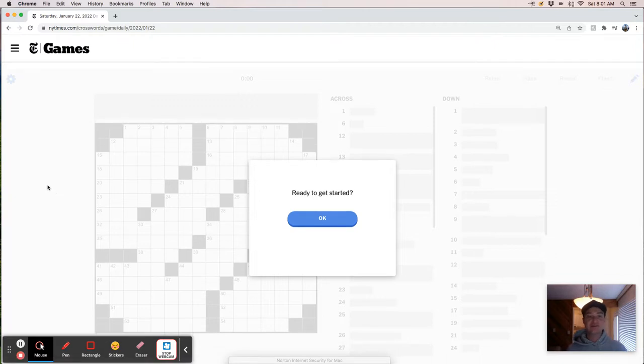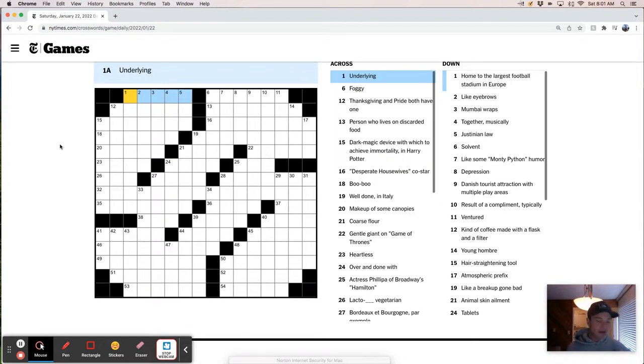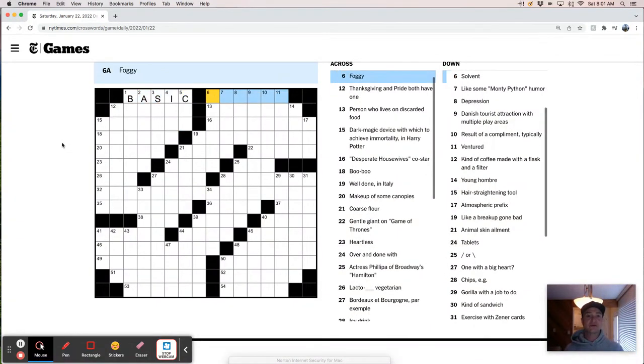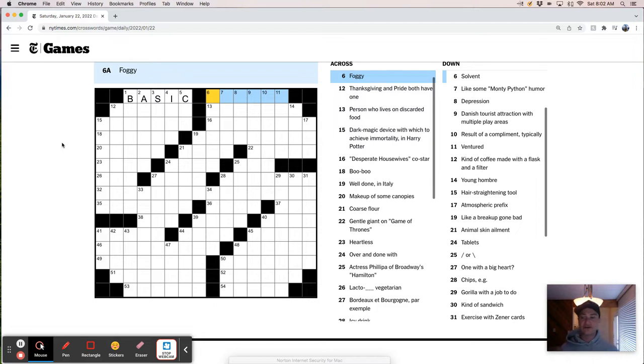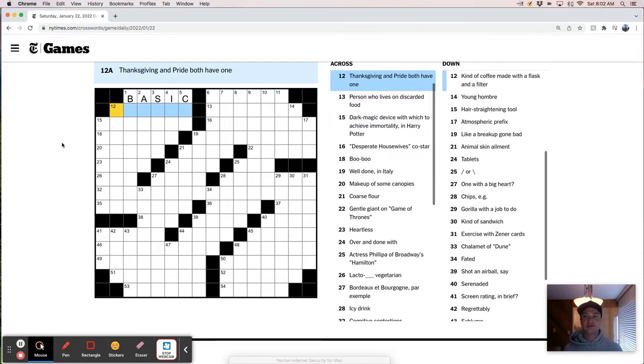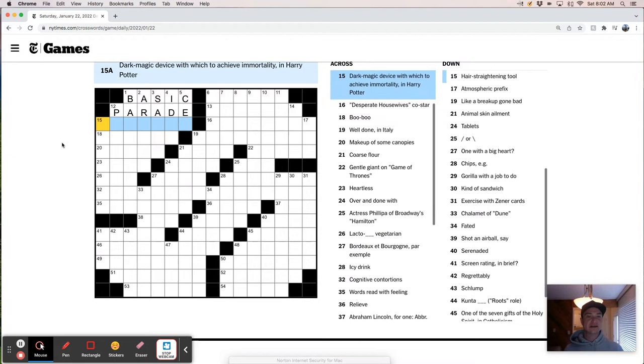Sometimes the video just cuts out and I'm not really sure how to resolve that. I'm not really much of a tech guy. So anyways, underlying, so like basic maybe, that'd be right. What's this? Together. So I'm not sure if basic is right there. Foggy. Thanksgiving and pride both have one. Parade. A person who lives on discarded food. So I mean, I think that's like a dumpster diver, right? I don't know. I mean, it would have to be that can't be a rebus on a Saturday, right?